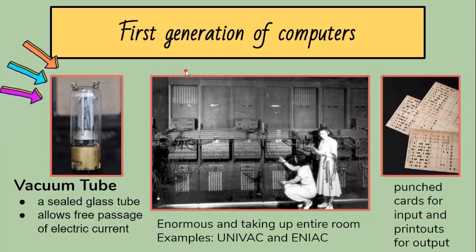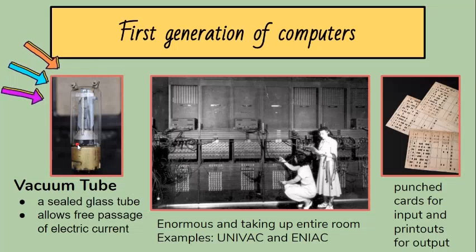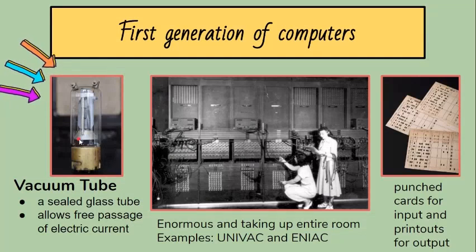The first generation of computers used vacuum tubes. A vacuum tube is a sealed glass tube containing a near vacuum which allows the free passage of electric current. It is an electronic tube about the size of a light bulb.